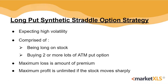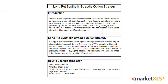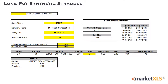MarketXLS offers a template for this strategy. Here's an introduction page and here's the active template. The cells in yellow have to be inputted by the user: the stock ticker, expiry date, ATM strike price, the number of stocks and the price at which the trader entered the long position, and finally the number of lots which the trader decides to buy. Some upcoming expiry dates, the current share price and lot size are also available for the investor's reference on the right.